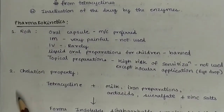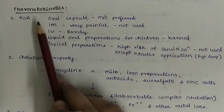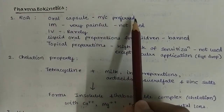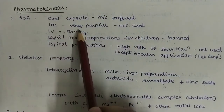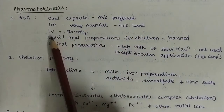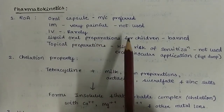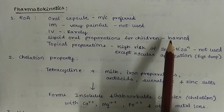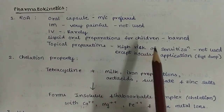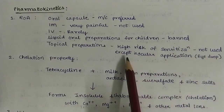Next, pharmacokinetics. Route of administration: oral capsule is the most commonly preferred. IM is very painful and hence not used. IV is readily used. Liquid oral preparations for children are banned in India. Topical preparations have a high risk of sensitization and hence not used.